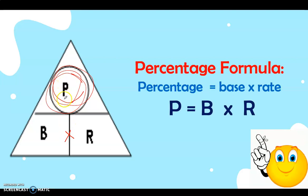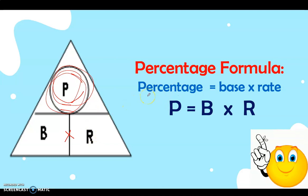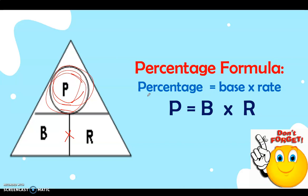For the formula, if P is missing, we have: Percentage equals Base times Rate. That's the formula for finding the percentage — the base, or the total number of items, or the total whole value, multiplied by the percent.